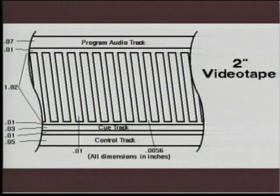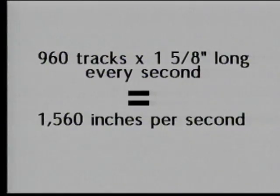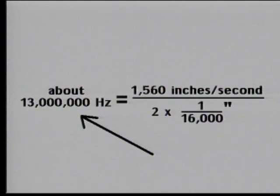The rest is overlap. If we do the math on the Ampex system, we find that the effective tape-to-head speed is 1,560 inches per second — 960 tracks per second, each one being 1 and 5/8 inches long. Using our familiar formula, this means that we can record a frequency of up to 13 megahertz — plenty of room for our 4.2 megahertz video signal.